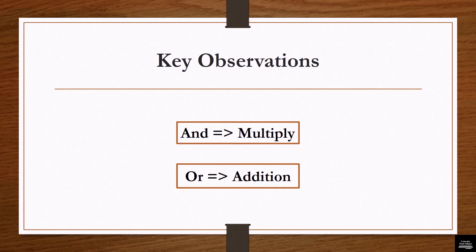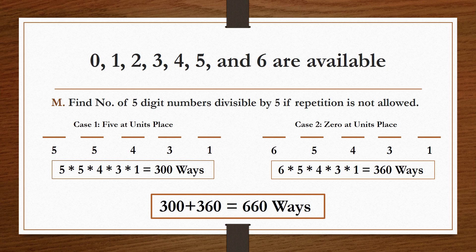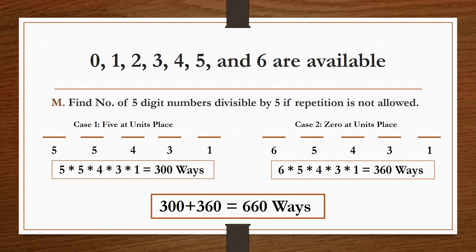The second point: in case of OR, you need to do addition. For example, if you need to find the number of ways digits can be arranged so that the number formed is divisible by 5, there are two cases — either the last digit is 0 OR the last digit is 5. You find the ways for each case separately and then add both results to get the total number of ways the number formed would be divisible by 5. This is an example of OR.